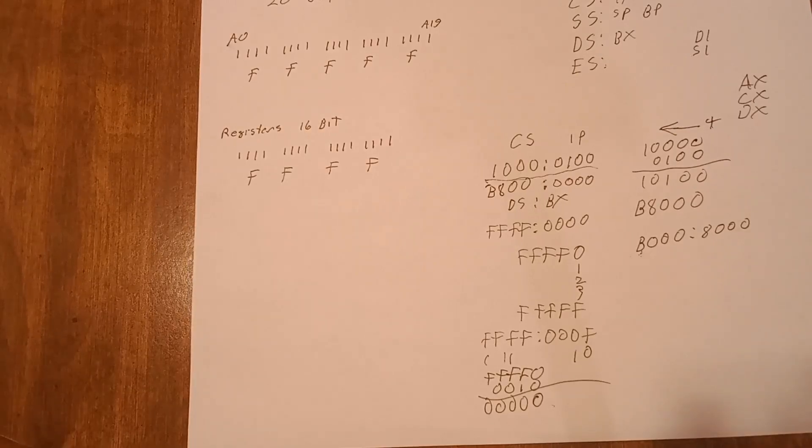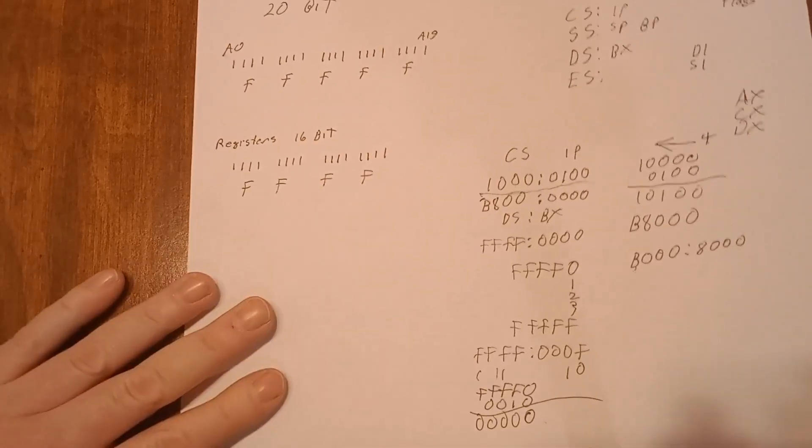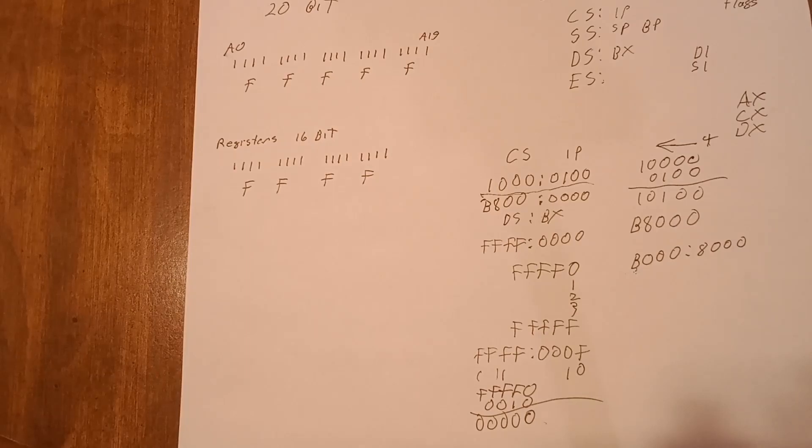So hopefully that made sense. Hopefully I didn't confuse anybody, but that's the basics of how you take a 16 bit register to make a 20 bit address.